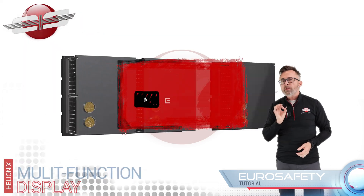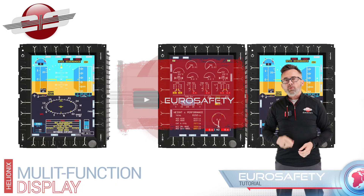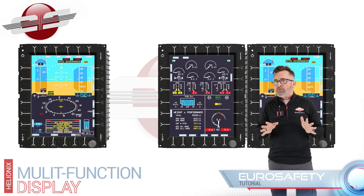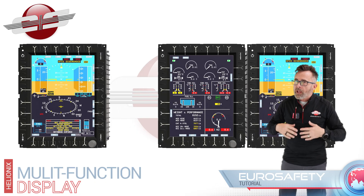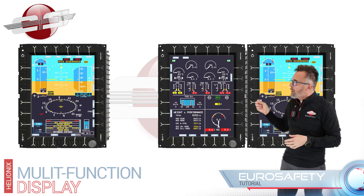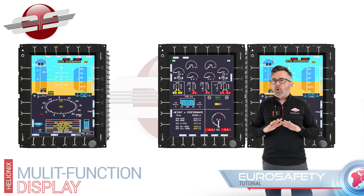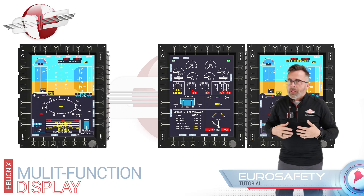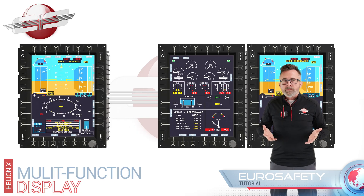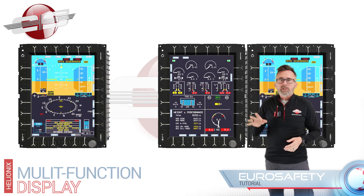Today we're going to start a tutorial series for the Helionics system that you would find in the H-145. This system is extremely robust in features and information, and because of that, the Helionics system is not a piece of equipment you can just figure out once you get into the cockpit. To safely use this system, it requires substantial study in order to operate the helicopter without distraction. So today, let's start with an overview of the display systems.